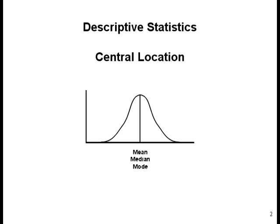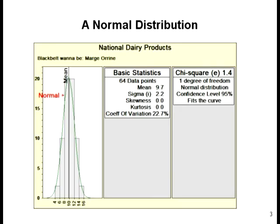So in so doing, she takes her data, puts it in ChartRunner, and takes a look at the histogram. Take a look at what you see here. Let me jump to the answer. What has ChartRunner said? ChartRunner has said the particular data over here, which by visual inspection does look quite normal, indeed is normal — it fits the curve — and the confidence we have in that is 95%. It also displays the chi-square value, which happens to be 1.4.